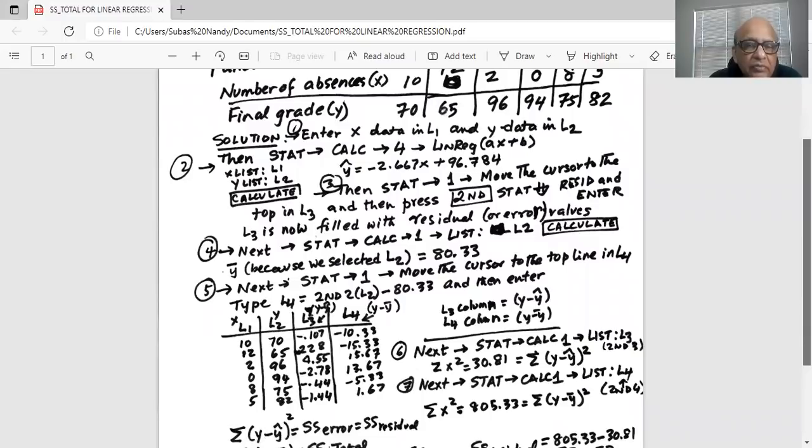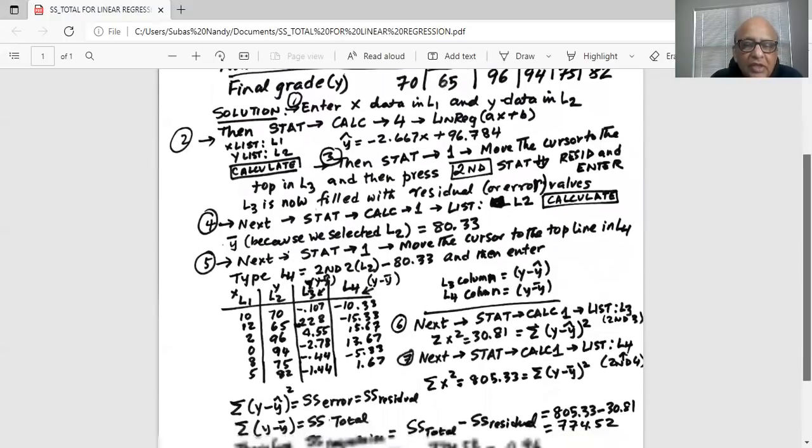Then we will do STAT 1, move the cursor to the top line in L4 and type in L4, L2, which is y minus y bar, which is 80.33. So in L4, you are typing where L4 is written: second 2, which is L2, minus 80.33 and hit enter. Then L4 is filled up with y minus y bar. Remember L3 is filled with residual, which is y minus y hat.